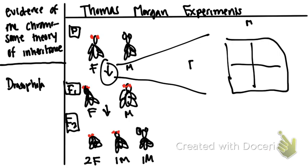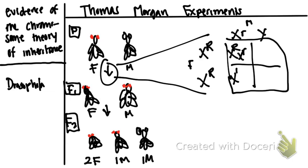For the Punnett square, the male is on top with XY chromosomes and the female is on the bottom with two X chromosomes. He proposed that genes linked to the X chromosome are inherited with it. Using capital R for red eyes and lowercase r for white eyes, when you cross them you get X capital R with X lowercase r combinations — meaning no white-eyed males appear in this cross, only red-eyed males.